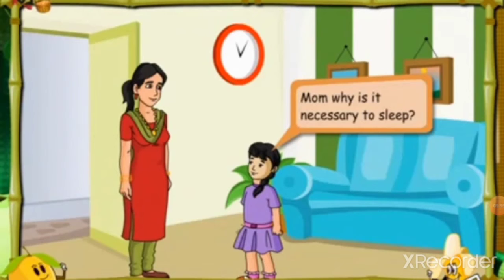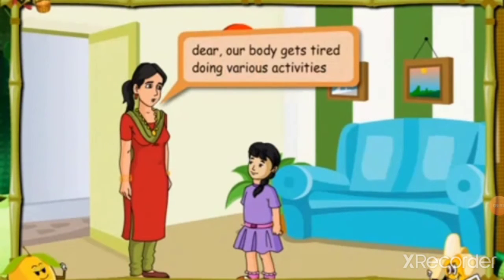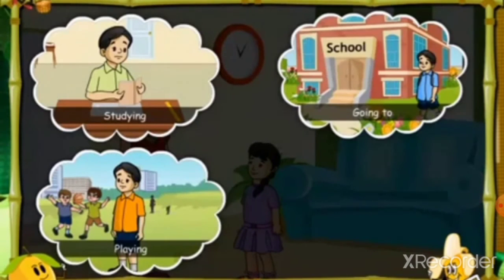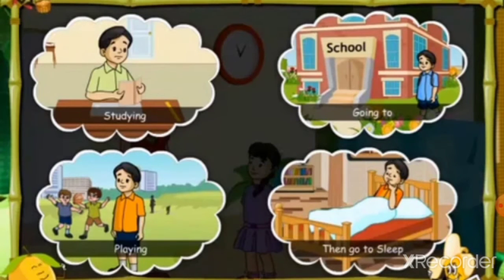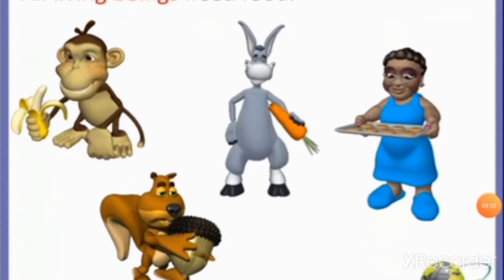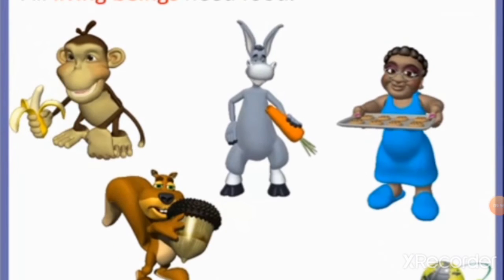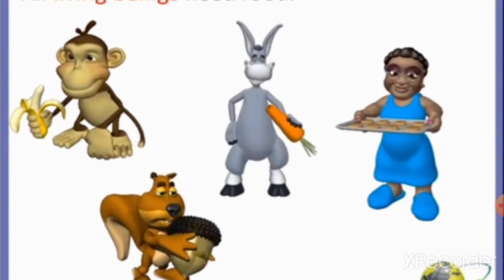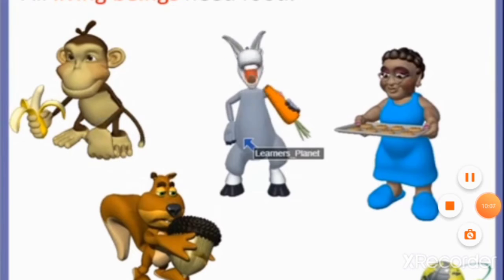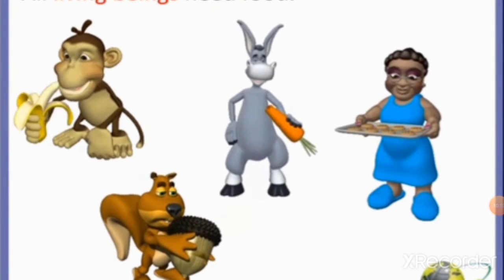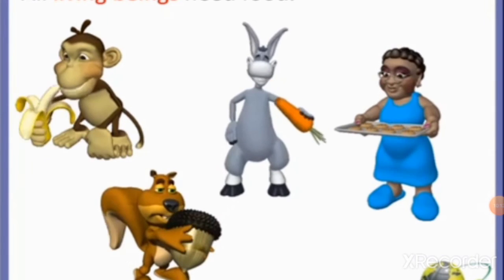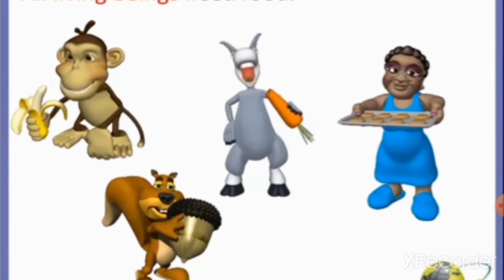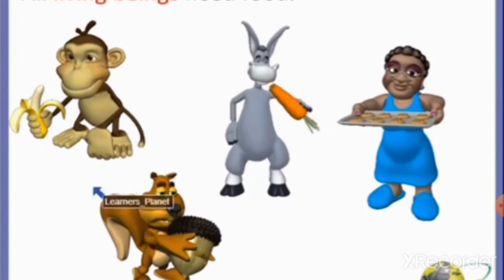Our body needs rest for proper functioning and doing different activities. We need 6 to 8 hours of sleep a day for activities like studying, playing, and going to school. All living beings — birds, animals, plants, and human beings — need food for doing different activities. Human beings are dependent on a few basic needs for living, without which they cannot survive. These basic needs are food including water, shelter, and clothes.